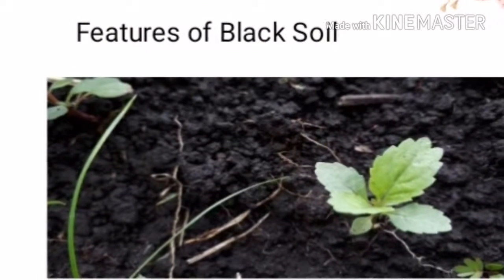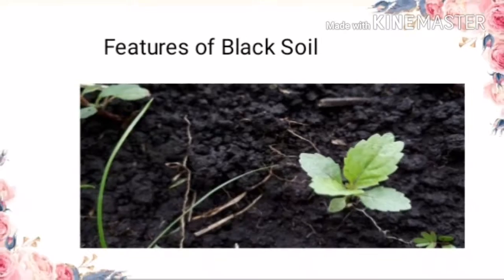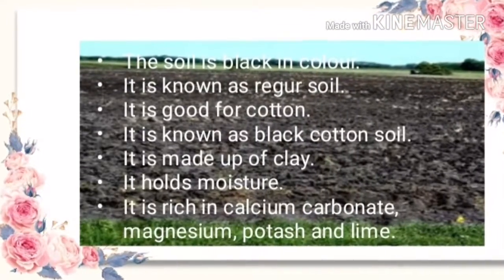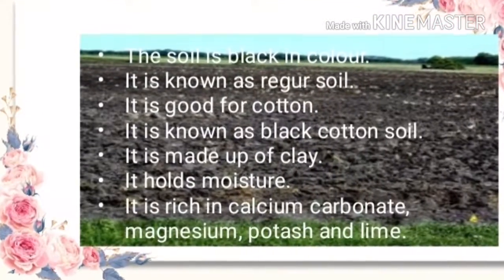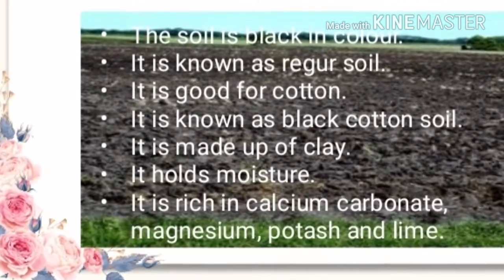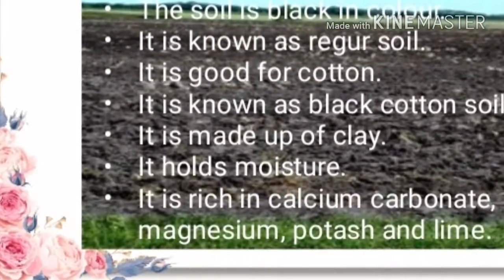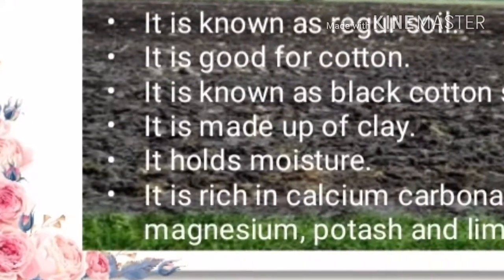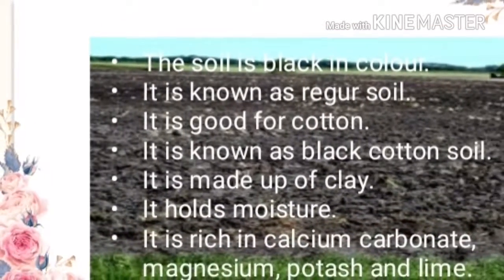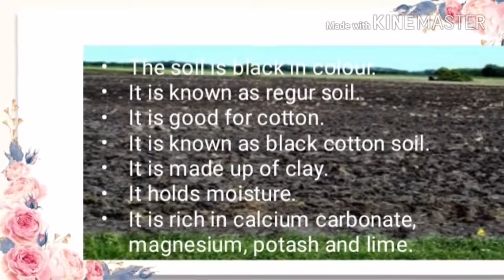Next is black soil. This soil is black in color. It is also known as regur soil. It is ideal for growing cotton and is known as black cotton soil. It is made up of clay material. It can hold moisture. It is rich in calcium carbonate, magnesium, and potassium lime.